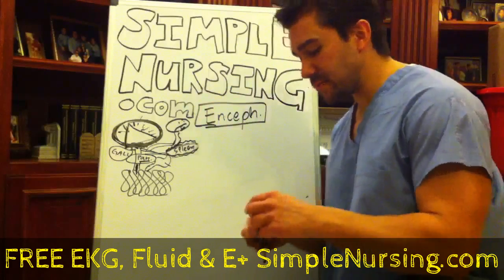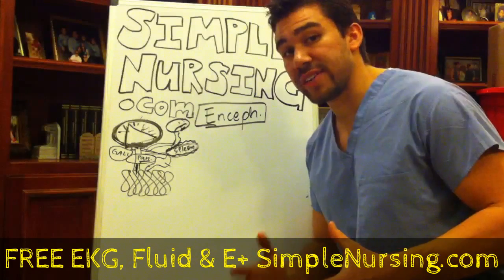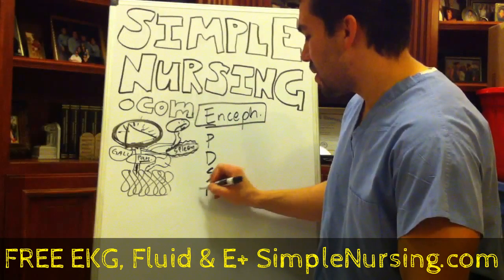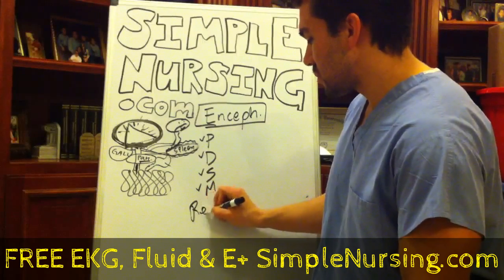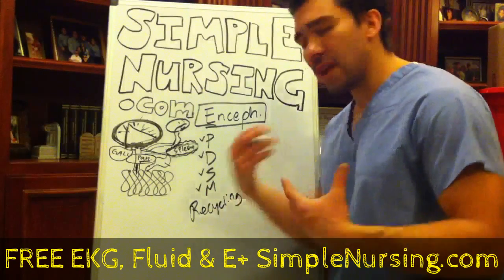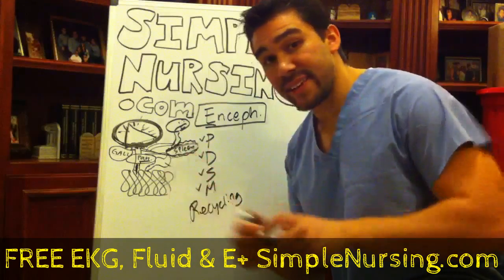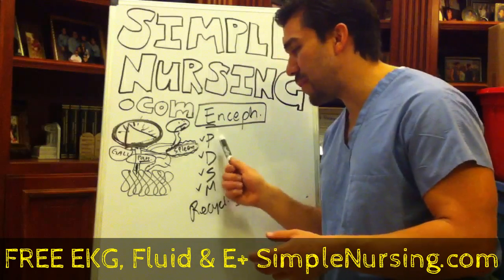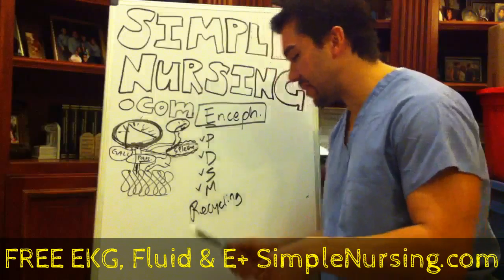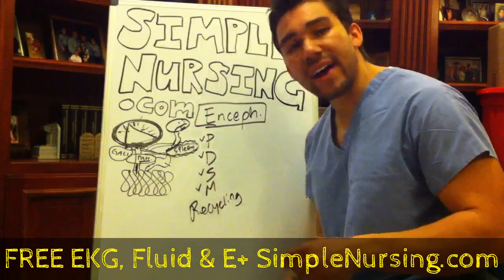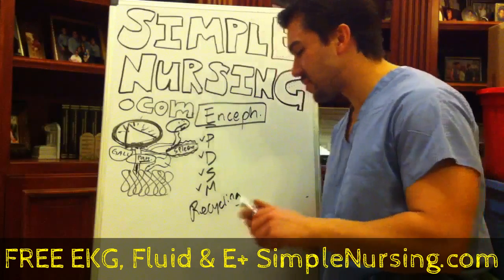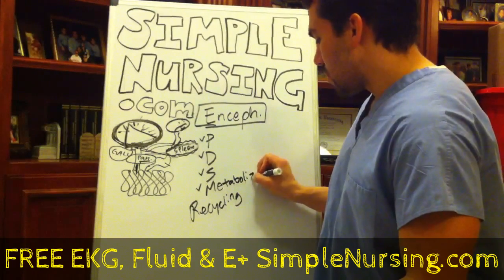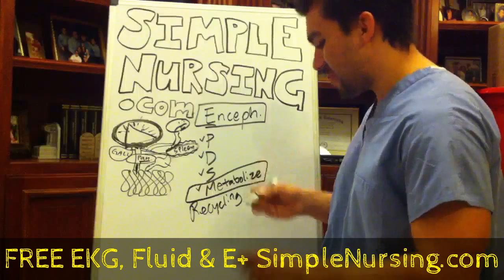Continuing on in our lecture series of the liver — I'll use the shorthand here. In our first lecture I introduced the PDSM Recycling Company — turning your liver into a recycling company. PDSM stands for Produce, Detox, Storage, and Metabolize. I call it PDSM because 'people drink so much.' Encephalopathy really focuses on the metabolizing part of the liver.